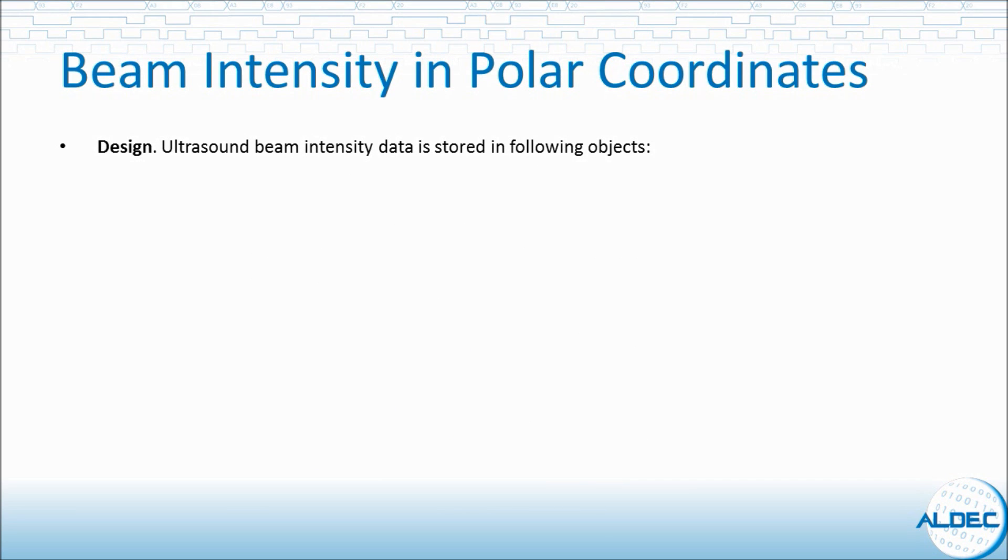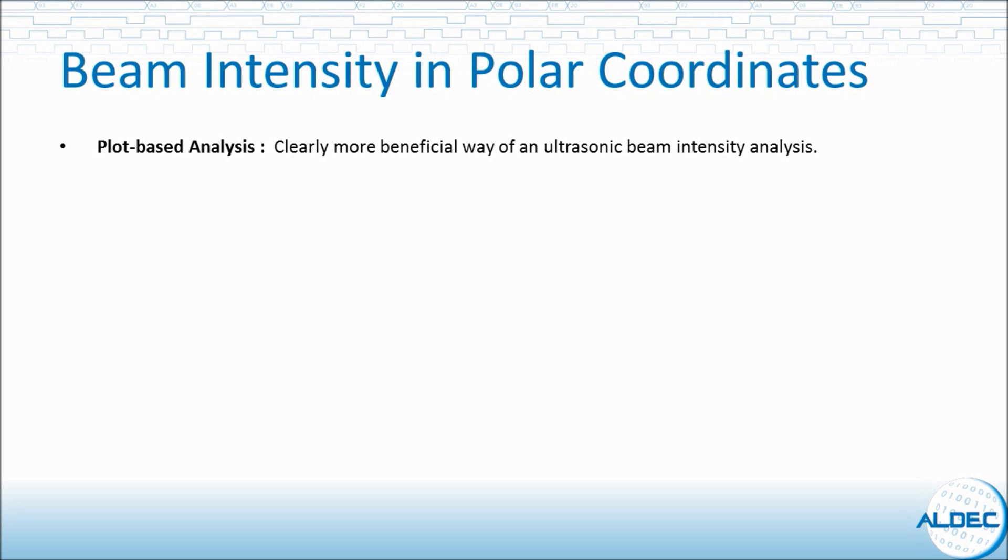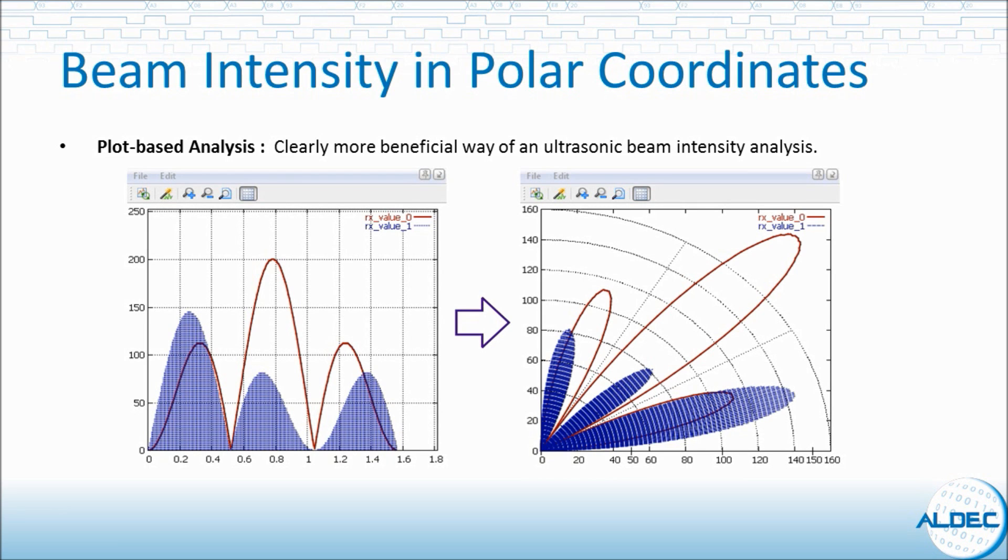The second example we have here is the analysis of ultrasound beam intensity. The ultrasound beam intensity data is stored in following objects. Angles are stored in rx underscore angle and beam intensity values are stored in rx underscore value underscore zero and one. Here too we would have the same problem as before where the traditional way would be to view the data in a tabular format or use other third party tools to convert the data and display them in a graphical format. And on top of that, this example is not suited for a Cartesian graph. A better approach would be to take a look at the data on a polar plot. Here we see the plot based analysis of the arrays listed above and also the comparison between the Cartesian and the polar representation. And as you can see polar representation is clearly more beneficial in this particular case of ultrasound beam intensity analysis.